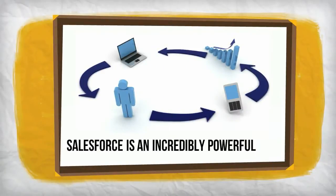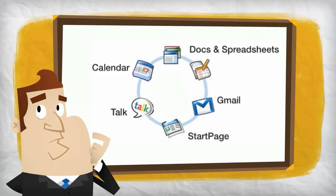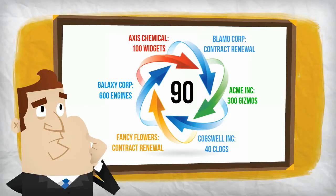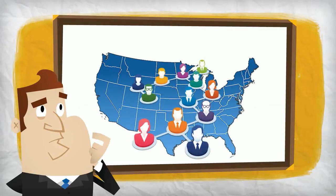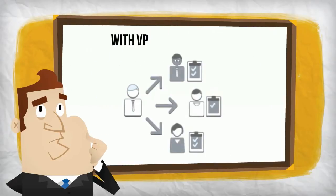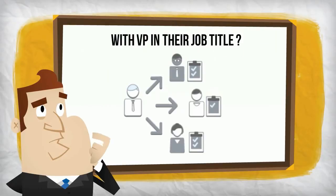Salesforce is an incredibly powerful CRM. Are you still struggling to find just those contacts, accounts, or opportunities that need the most attention? Do you know how to quickly find those large opportunities that you haven't updated in the last 30, 60, or 90 days? Do you know how to easily locate your accounts within a specific geographic area and a particular industry? Can you quickly pull up all of your accounts with Vice President in their job title?